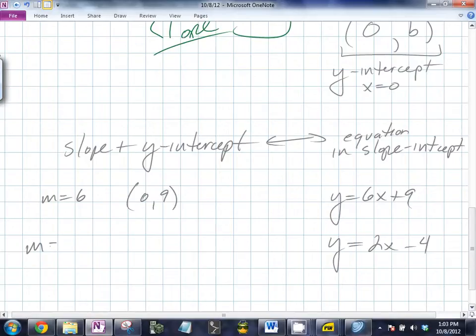Yep, and what's the intercept? Negative 4. Nope. Zero, negative 4. There we go. Zero, negative 4. Excellent. So if you have one, you can go back and forth quite easily.